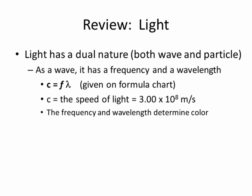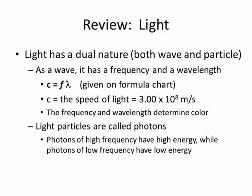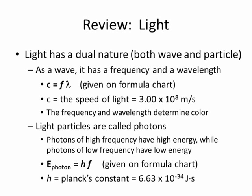The color of light is closely linked to its frequency and its wavelength. As a particle, we call light particles photons, and the energy of a photon is determined by E equals H times F, where H is Planck's constant and F is frequency. The equation and the value of H are given to you on the formula chart. Notice that as frequency gets higher, energy gets higher, and low frequency goes with low energy.